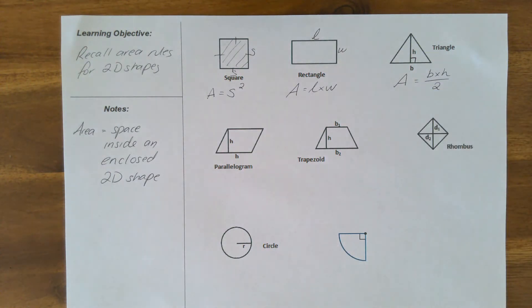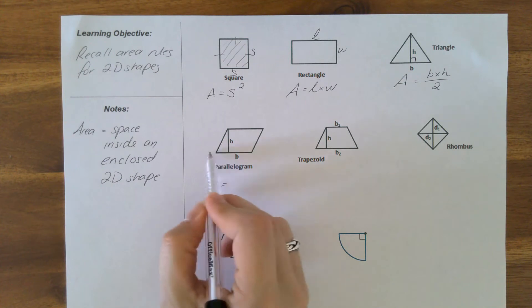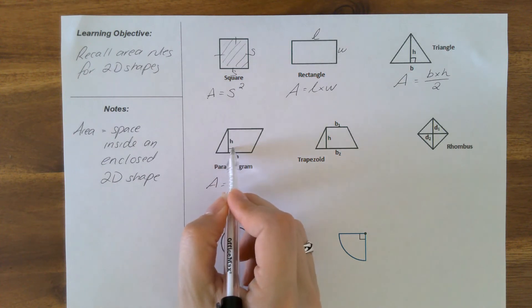This is a parallelogram and our area relies on us knowing the b for base and again h for perpendicular height, so it runs at a right angle to the base. Our area here is base times height.